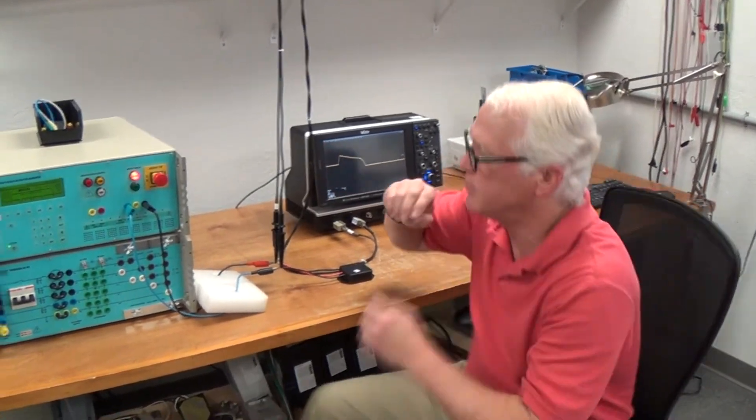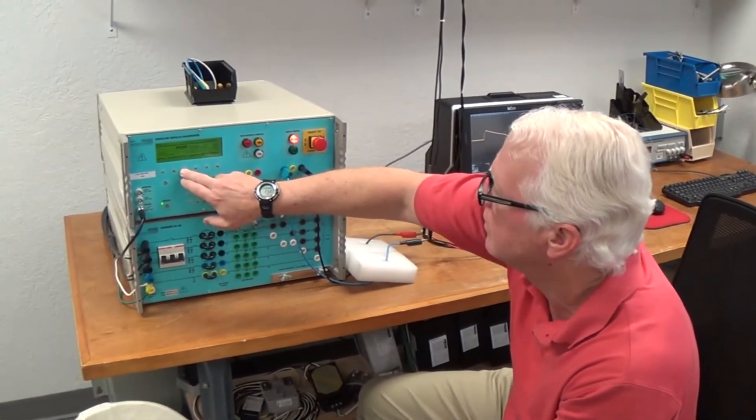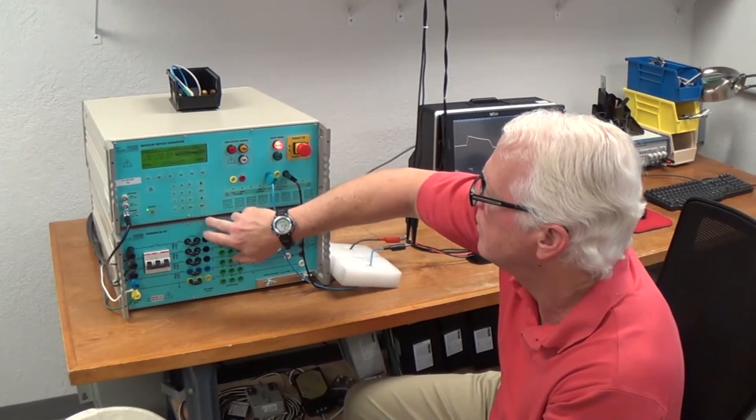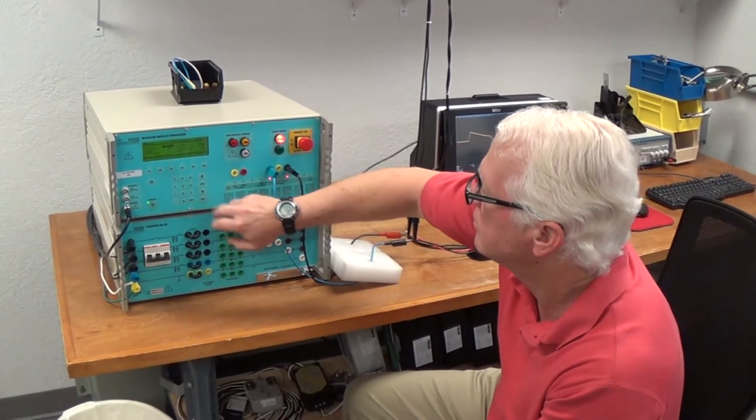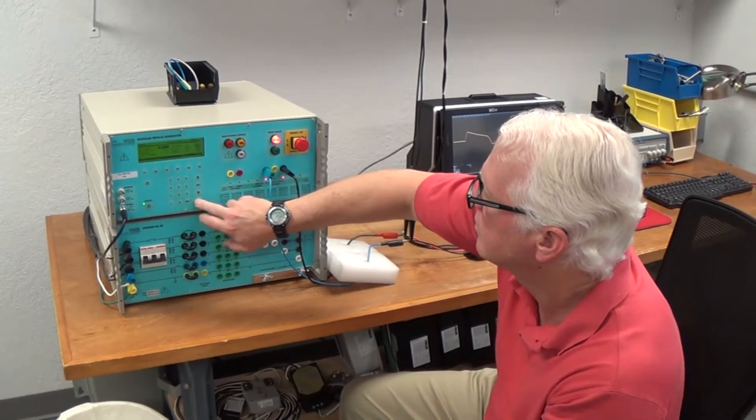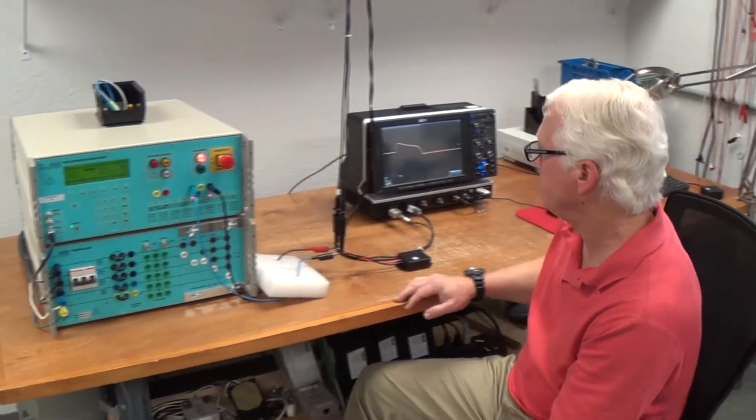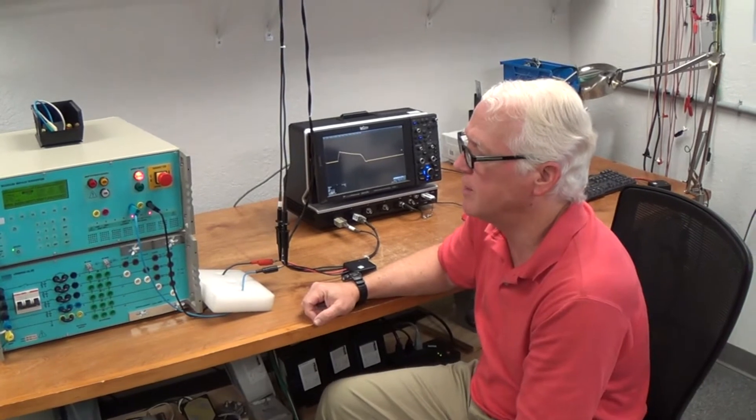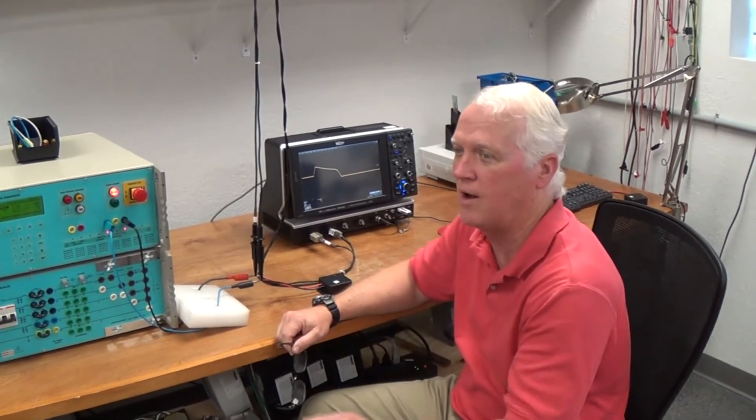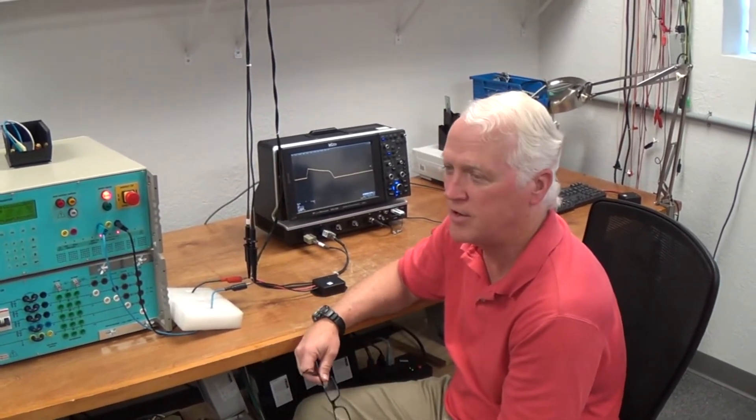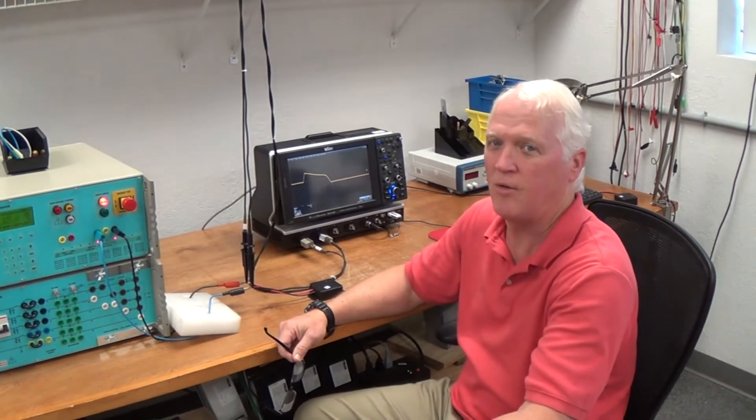So I'll change it now to a 2,000 volt ringing waveform. Okay, now let's say this simulates the internally generated transients, and you get a lot of them. A lot more internally generated transients because your electronics are always working.